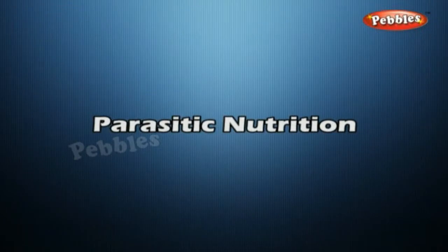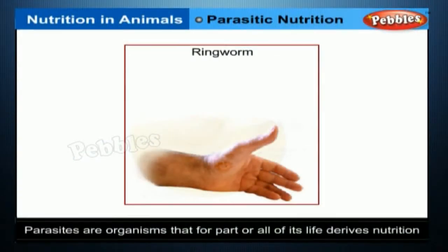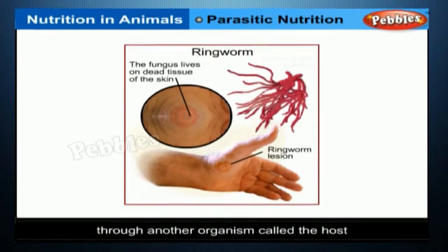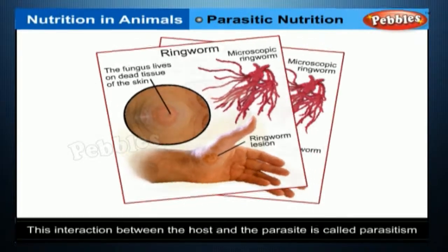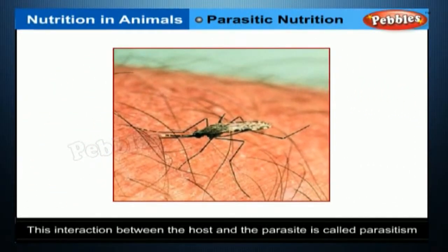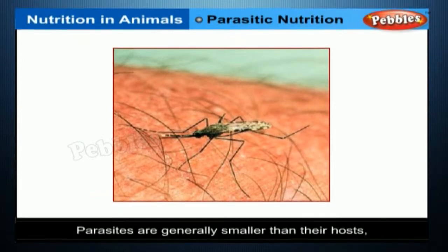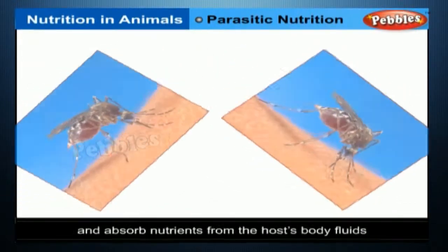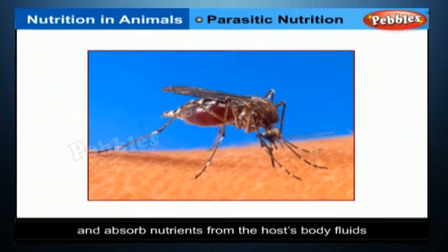Parasitic Nutrition. Parasites are organisms that, for part or all of their life, derive nutrition through other organisms called the host. This interaction between the host and the parasite is called parasitism. Parasites are generally smaller than their hosts and absorb nutrients from the host's body fluids.